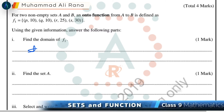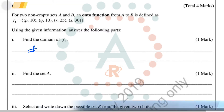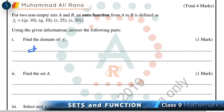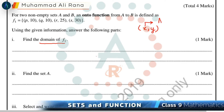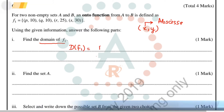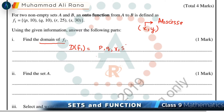This question comprises four marks. First, we have to find the domain of function f1. In an ordered pair (x, y), the domain consists of all the x-values — the abscissas. So the domain of function f1 is equal to {p, q, r, s}.